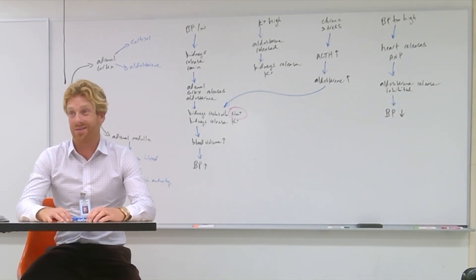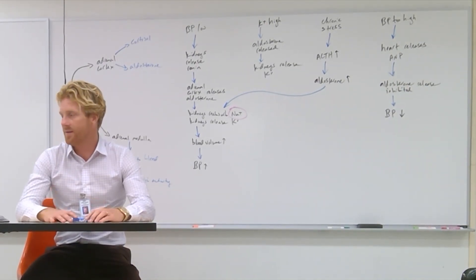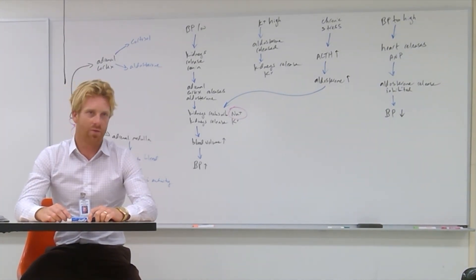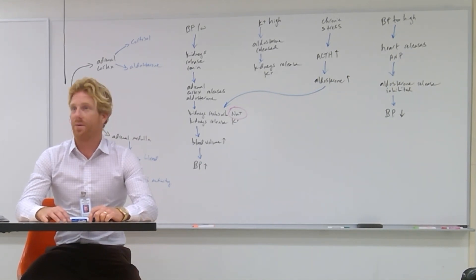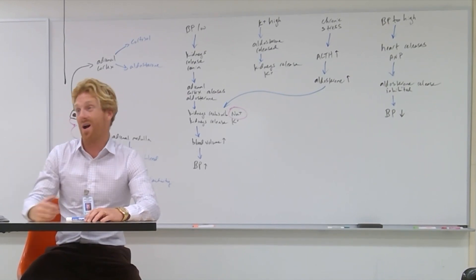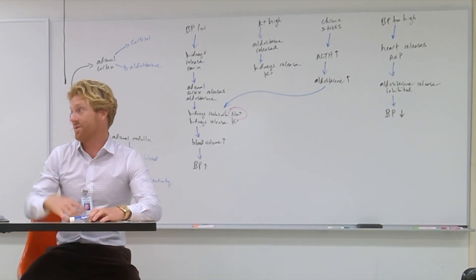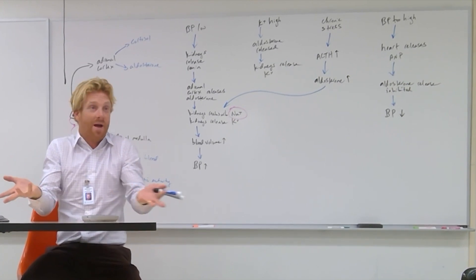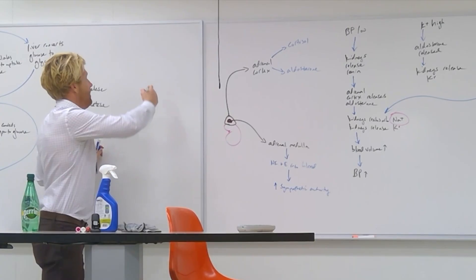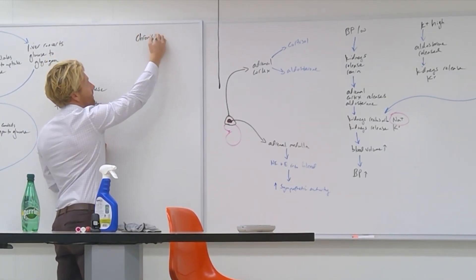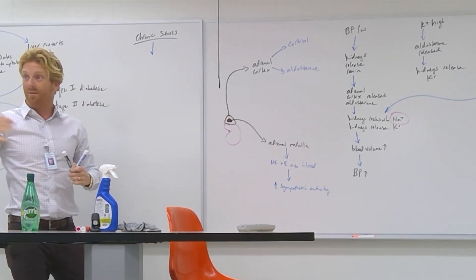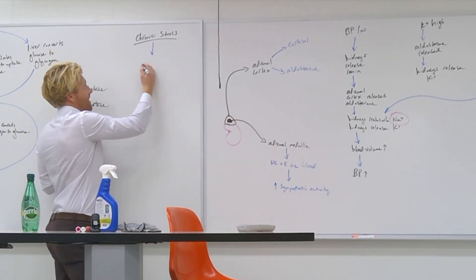And the thing that gets cortisol out of whack is chronic stress again. So this is not like you go exercising for 20 minutes. Like that's not going to throw your cortisol for a loop. But if you are experiencing like a really stressful situation for multiple days or even weeks, that's what's going to cause cortisol to increase. So again, we'll go with chronic stress. It's going to increase the amount of cortisol above normal levels that are coming out of that adrenal cortex.